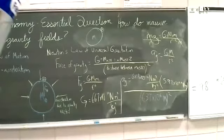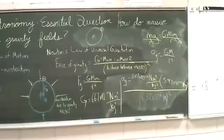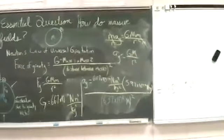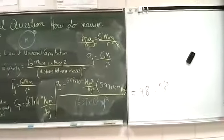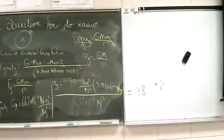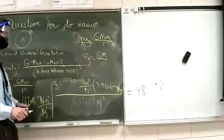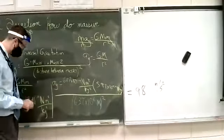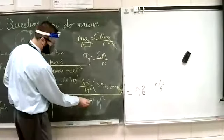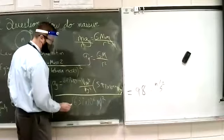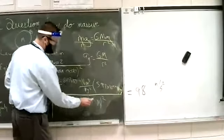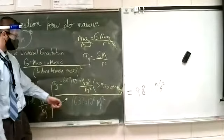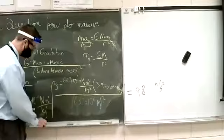Sorry to disrupt everyone. The units of this calculation, you can see that meters squared cancels these meters squared, this kilogram cancels one of these kilograms, so we get newtons per kilogram. Those are the units.